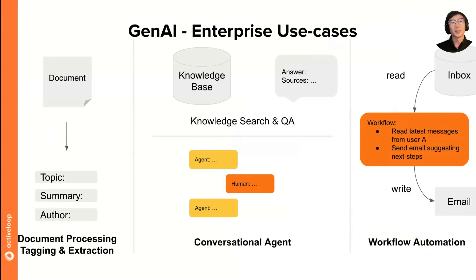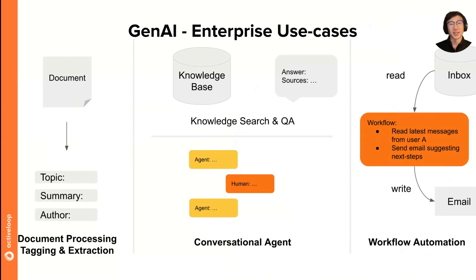Let's do an overview of RAG. There are a lot of enterprise use cases being discovered with Generative AI throughout this past year. This includes taking unstructured data and doing document processing and extraction, asking questions over your knowledge base and getting back an answer with sources and citations, engaging in some sort of conversation with a context-augmented agent, and also using LLMs as autonomous pieces to help automate different types of workflows that you used to do manually.